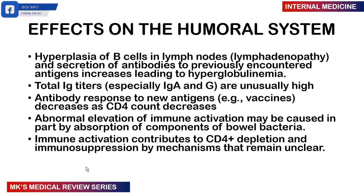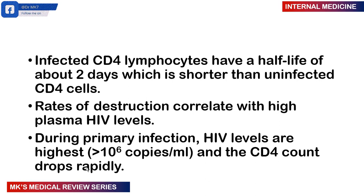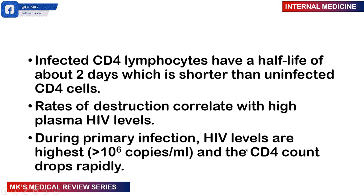The half-life of infected CD4 cells reduces to about two days — much shorter than an uninfected CD4 cell. The rates of destruction of CD4 cells are much higher if you have higher levels of the virus. So they move in opposite directions: the higher the CD4 count, the lower the viral load; the higher the viral load, the lower the CD4 count. During primary infection, the HIV levels are at their highest — more than 10^8 copies per mil — and the CD4 count begins to rapidly drop. The normal CD4 count is roughly about 750 cells per microliter. Immunity is minimally affected if the CD4 count is within normal ranges. If greater than 350, the immune system usually holds up. But if the count drops to less than 200, that's when you get loss of cell-mediated immunity, opening the floodgates to opportunistic infections and reactivation of latent infections like TB.